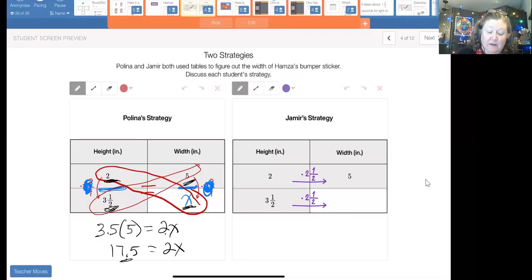But now I want to get that 17 and a half divided by two. Why divided by two? Because I want to turn this into an invisible one. Two over two is one. 17.5 divided by two gives me 8.75.